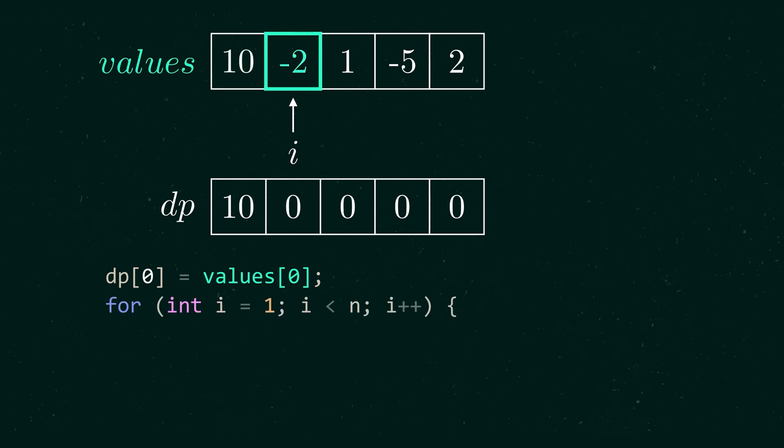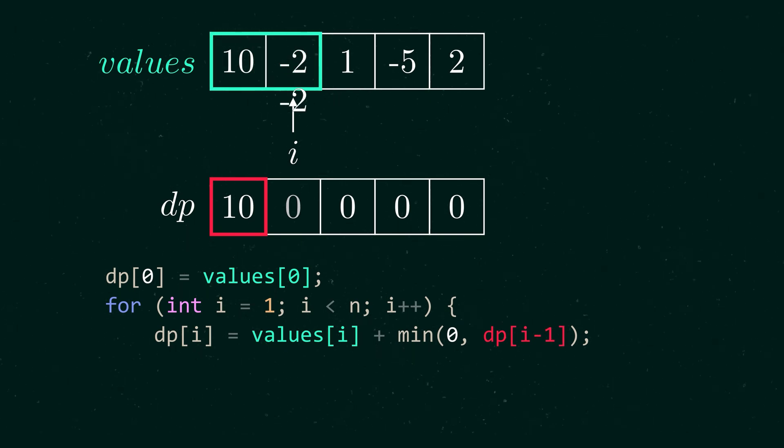For every next element, we must take the element's value itself and check if to this element we can attach the dp of i-1. We only want to attach the previous best solution if that solution happens to be a negative number. This will decrease the sum, which we are happy to do.